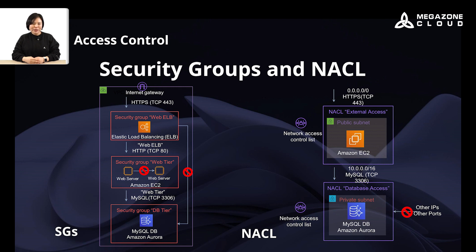In addition to security groups, if you want to add an additional network security layer, you can use network access control lists. NACLs filter traffic between subnets and they control inbound and outbound traffic by defining rules. Unlike security groups, NACLs are stateless, which means that you must define both inbound and outbound rules separately. NACLs follow rule number order, with lower number rules taking precedence.